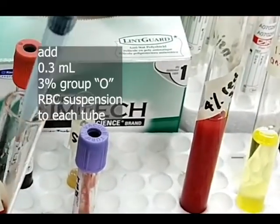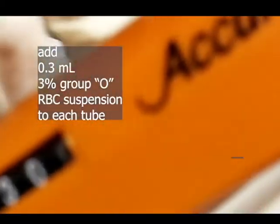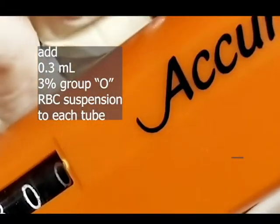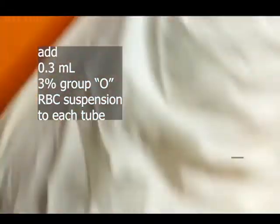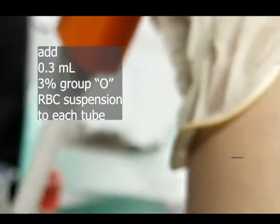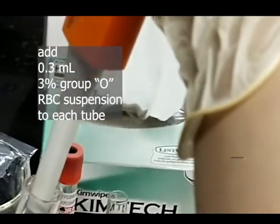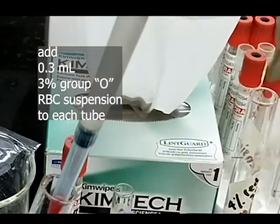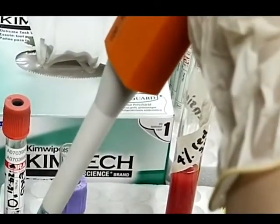Use a clean serological pipette to add 0.3 ml of a 3% group O human red blood cell suspension to each tube.